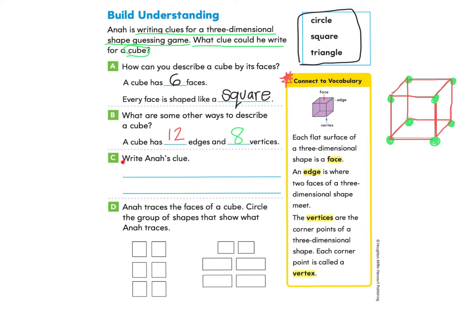Now we're ready to write Anna's clue. Maybe you want to pause and try this part on your own and come back. You can use the faces, the edges, and the vertices. So what shape has six faces that are squares, 12 edges, and eight vertices? That would be a clue.